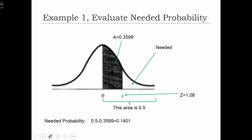Now, remember, that's this area in here between 0 and 1.08. What we need is over here. So we're going to take 50% and subtract from that 0.3599 to get an answer of 0.1401.